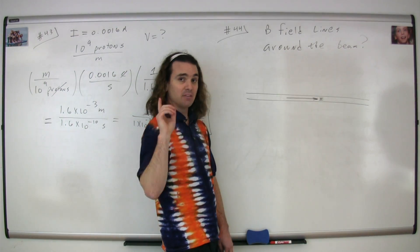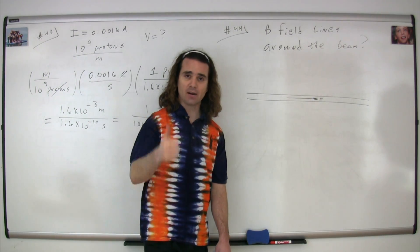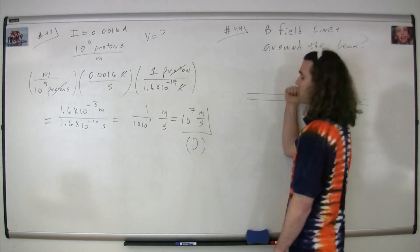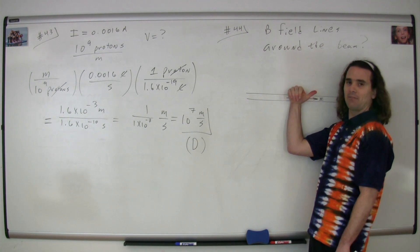We have our conventional current moving to the right in our wire. We take the thumb of our right hand, and we point it in the direction of the current. We curl our fingers in the direction of the magnetic field.